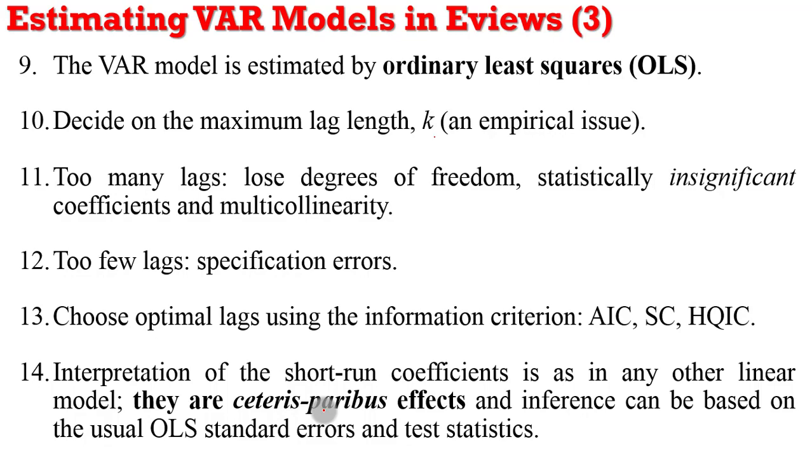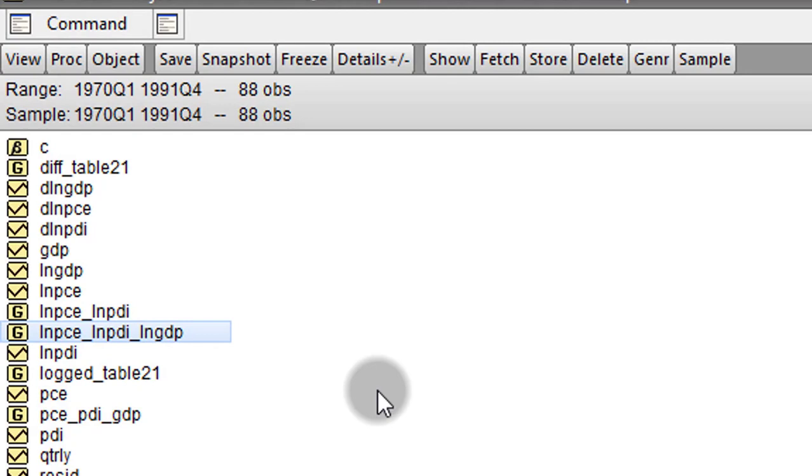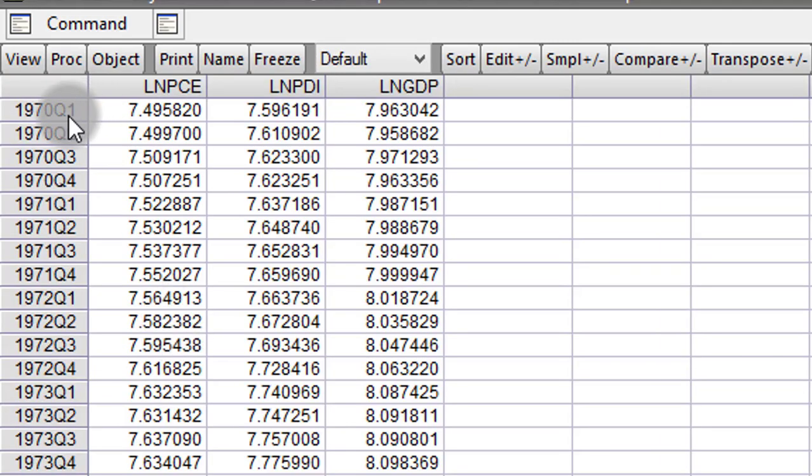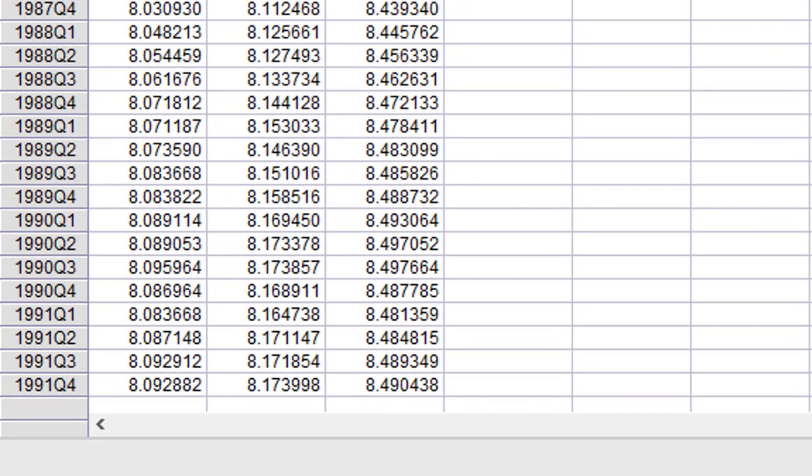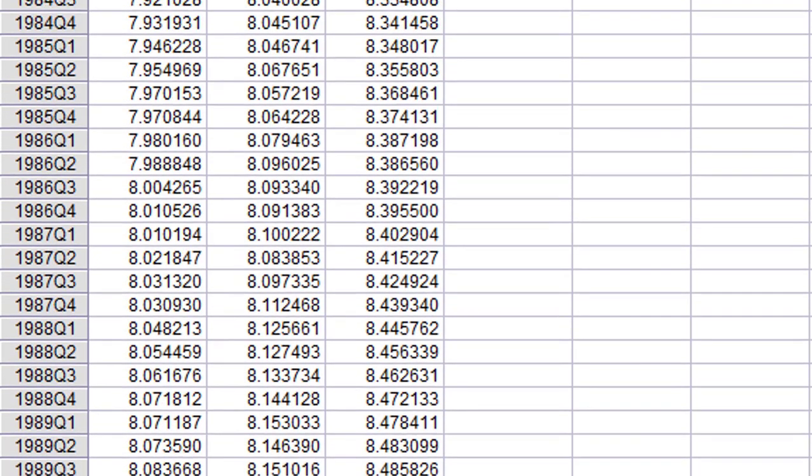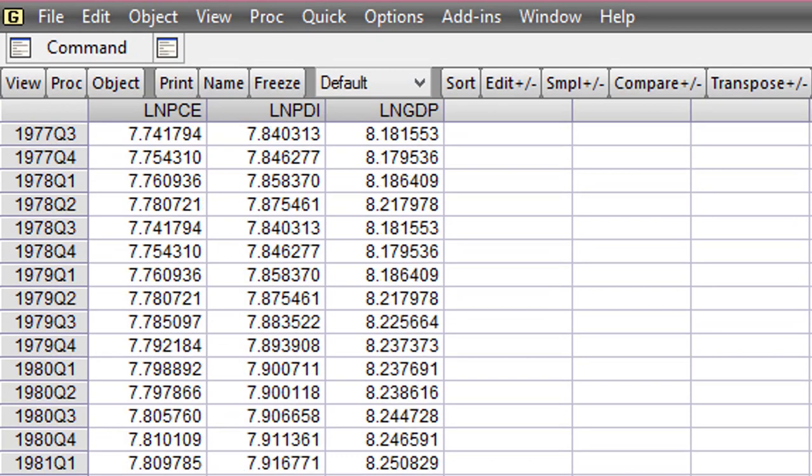So let's move on to EViews now and estimate an example. EViews is up. So here I'll be using the log of PCE, PDI, and GDP. My variables are from 1970 quarter 1 to 1991 quarter 4. So in total, I have 88 observations.